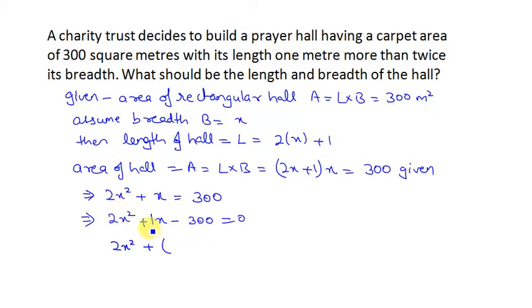I will do it in 2 pieces so that when I multiply them I get minus 600. I will break 1x into 25x and minus 24x. So now I have 2x squared plus 25x minus 24x minus 300 is equal to 0.